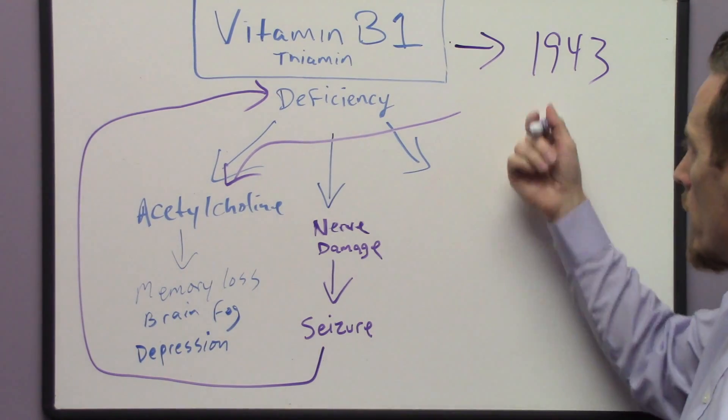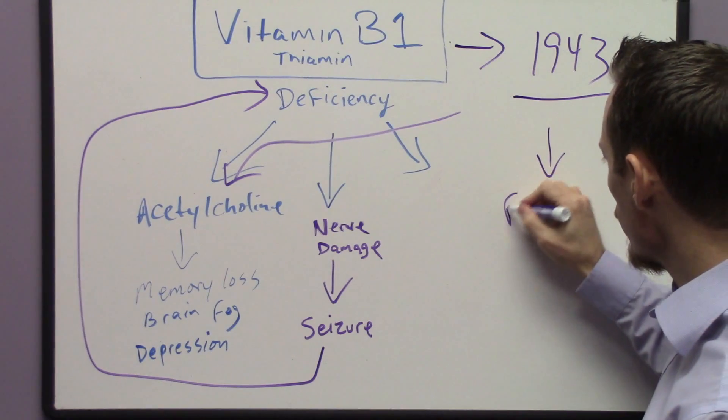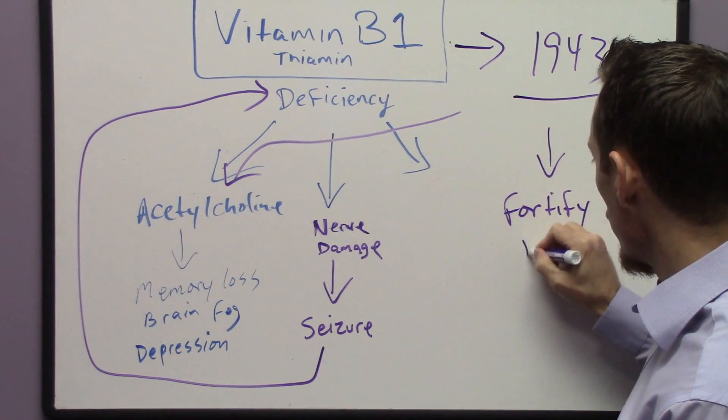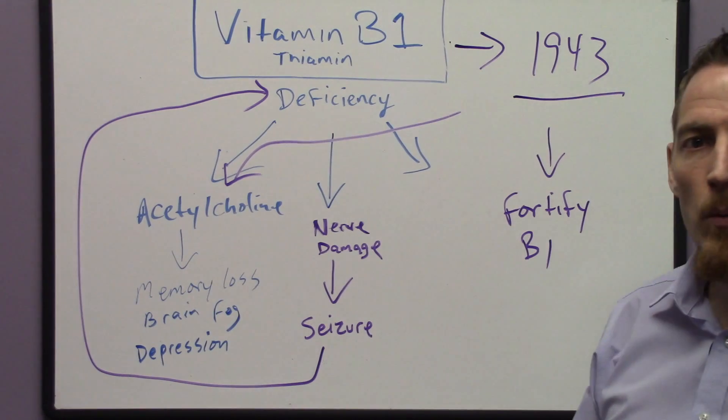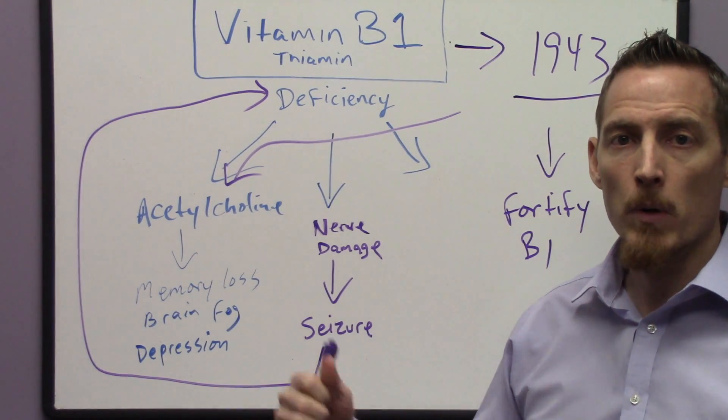And so in 1943, the U.S. government said, you can't sell this stuff anymore unless you fortify it with certain vitamins. And vitamin B1 is one of those nutrients on that list because of its association with beriberi.